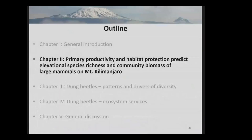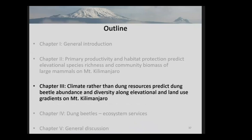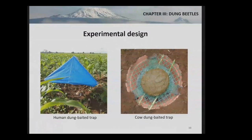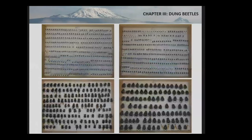That was the fun part — now it gets serious again with the dung beetles. This chapter is called: Climate Rather Than Dung Resources Predicts Dung Beetle Abundance and Diversity along Elevational and Land-use Gradients on Mount Kilimanjaro. For collecting dung beetles, we used baited pitfall traps with both human and cow dung. Human dung is the best method to collect dung beetles because we are omnivorous, so we collect the whole range in high numbers. I collected a total of 10,400 dung beetles, distributed across over 130 species and 50 genera.